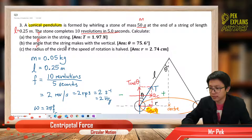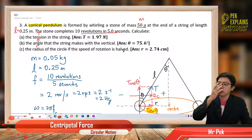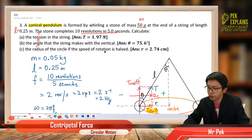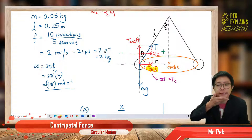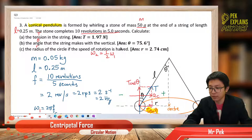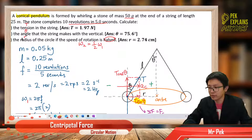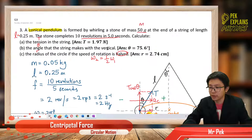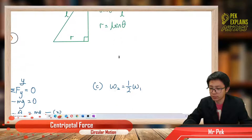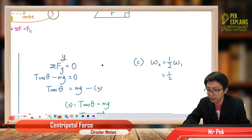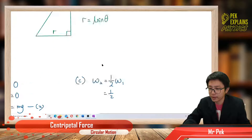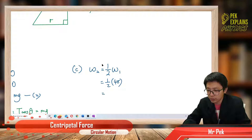Now for Part C: what is the radius of the circle if the speed of rotation is halved? Speed of rotation refers to omega, so omega 2 is half of omega 1. Just now we got omega 1 = 4π, so omega 2 = 2π radians per second, because it's half already.